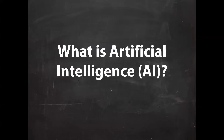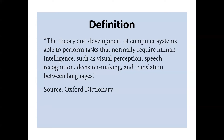Oxford Dictionary defines artificial intelligence as using the theory and development of computer systems performing tasks that require human intelligence, including visual perception, speech recognition, decision-making, and translation between languages. In summary, we're using machines to perform that human reasoning — to understand things seen visually, how we speak, decisions being made, and even translating languages, not specifically just English.